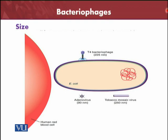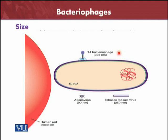Here is a size comparison for bacteriophages. You can see the human red blood cell, the RBC, and just a part of the RBC to show its size. As compared to it, this is the adenovirus at 90 nanometers. Similarly, the tobacco mosaic virus, which causes disease in tobacco plants, is much larger at 250 nanometers. The T4 bacteriophage is slightly smaller than the tobacco mosaic virus. This is the size of one of the simplest bacteria present inside the human and animal body — E. coli — with its plasmid and bacterial DNA visible.